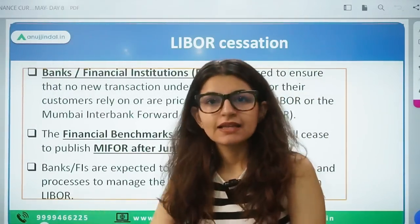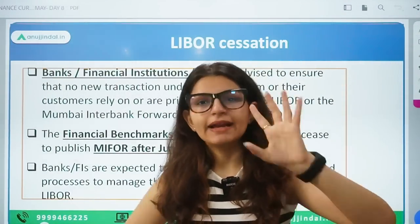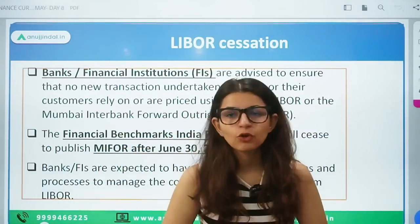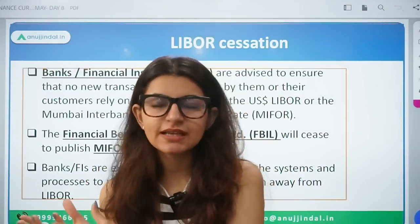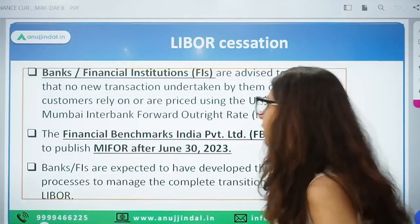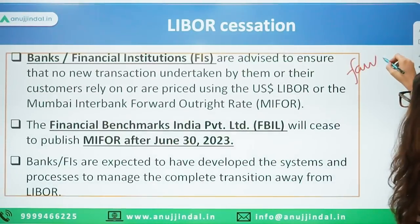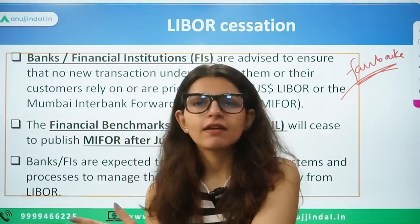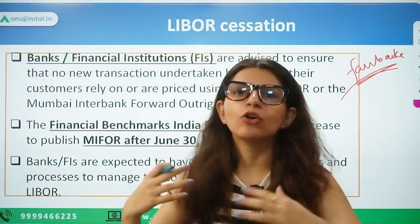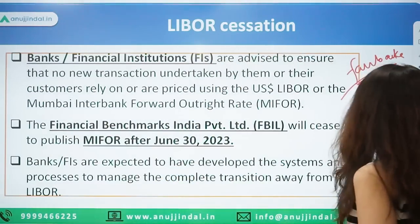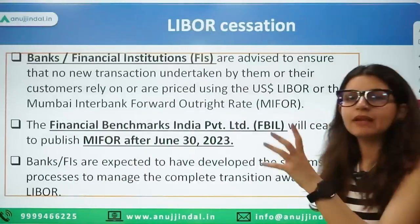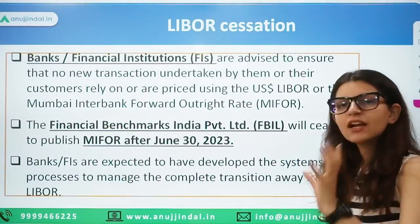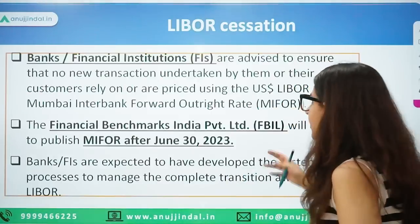RBI gave guidelines in 2021 on how the transition from LIBOR to a new reference rate should happen. If you already have a swap agreement or derivative agreement benchmarked to LIBOR, how will the transition take place? There is a term for this: fallback — meaning accounting for the transition. Banks and financial institutions are now advised by RBI that no new contracts will be entered into using LIBOR as the benchmark.